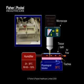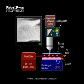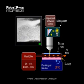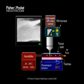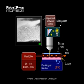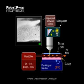We observed the trachea sample with a microscope through a heated glass window in the top of the tissue bath. A high-speed digital camera connected to the microscope let us record the beating cilia and mucociliary transport of debris caught in the mucous layer, as you can see in this video. The experimental setup let us show real-time measurements as the temperature and humidity of air flowing over the trachea were changed at the humidifier.